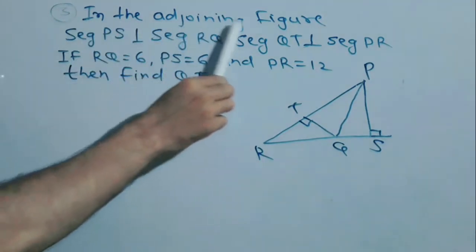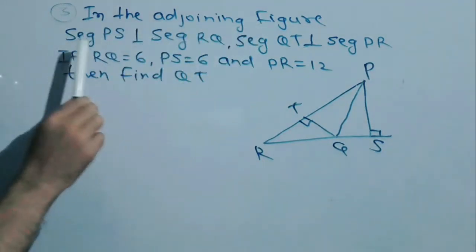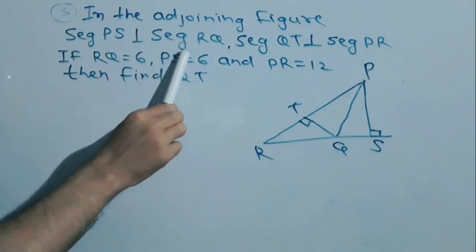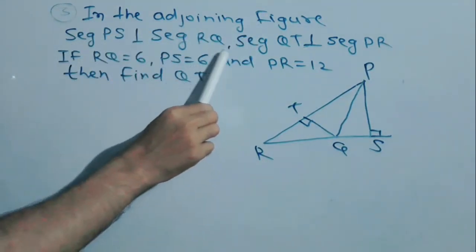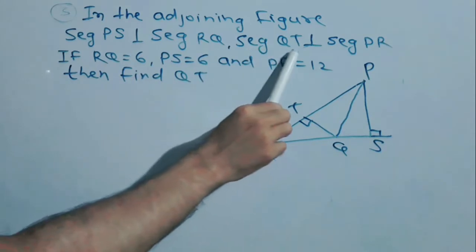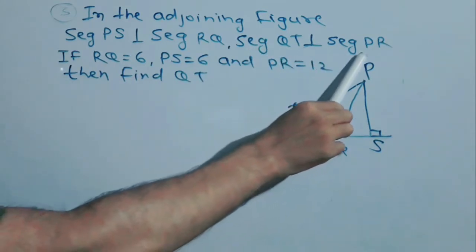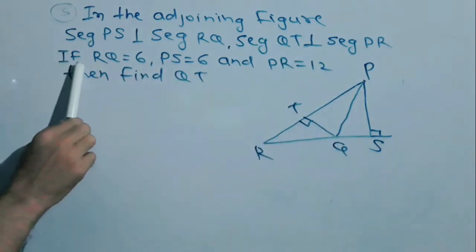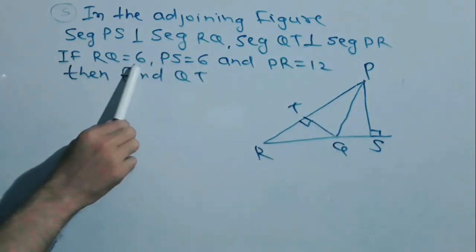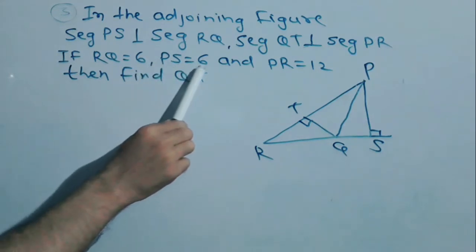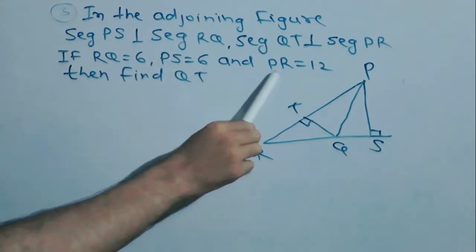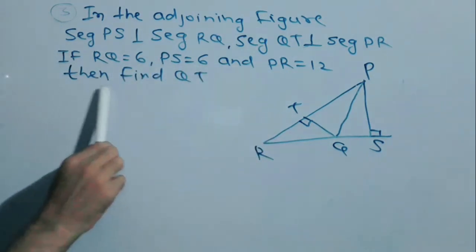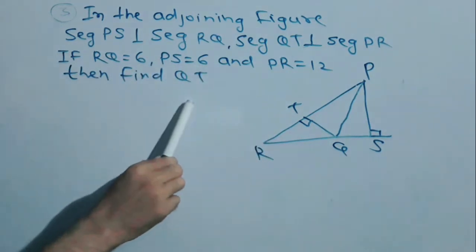In the adjoining figure, segment PS is perpendicular to segment RQ, and segment QT is perpendicular to segment PR. If RQ is equal to 6, PS is equal to 6, and PR is equal to 12, then find QT.